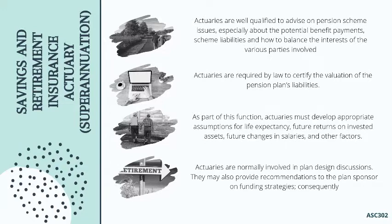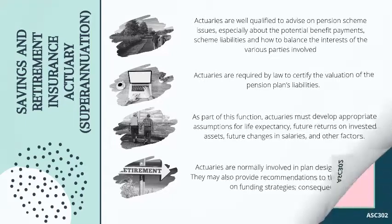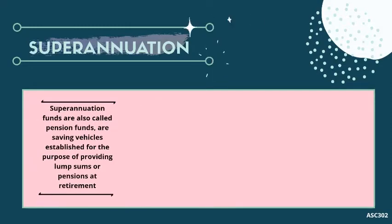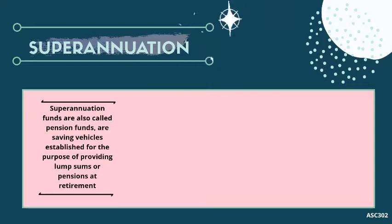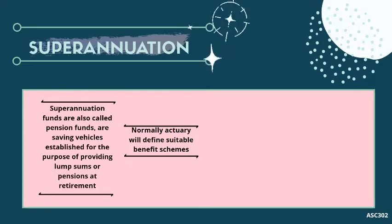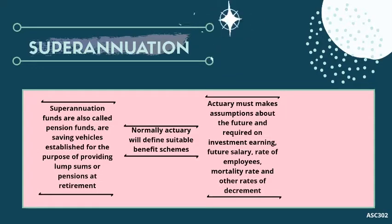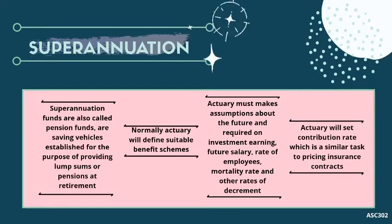Actuaries are normally involved in plan design discussions and may also provide recommendations to the plan sponsor on funding strategies. Superannuation funds, which are also called pension funds, are saving vehicles established for the purpose of providing lump sums or pensions at retirement. Normally, an actuary will define suitable benefit schemes and must make assumptions about the future, including investment returns, future salary rates, mortality rates, and other rates of decrement. The actuary will set the contribution rate, which is a similar task to pricing insurance.